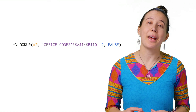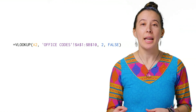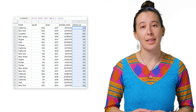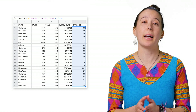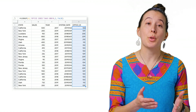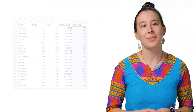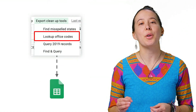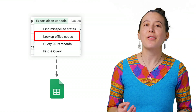The next macro in your custom menu matches each data entry to a particular office code, since office codes are not included in your system's export. The macro does this by recording you using a VLOOKUP formula that looks up states and office codes from another tab in your sheet, and then dragging that field down the entire column. Now you can select CleanMyExport > LookupOfficeCodes, and in a few seconds, it populates column E with the correct values for you.